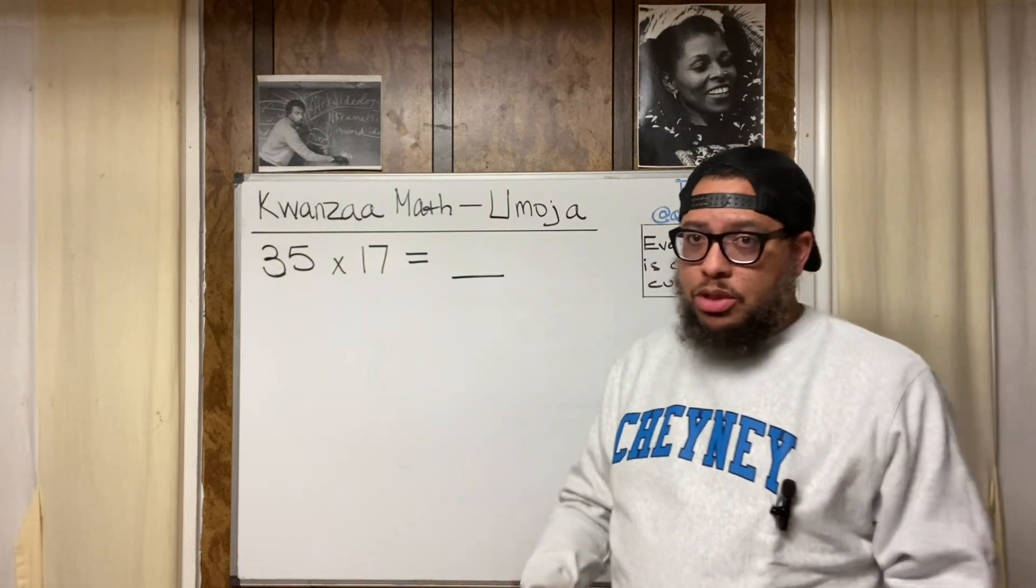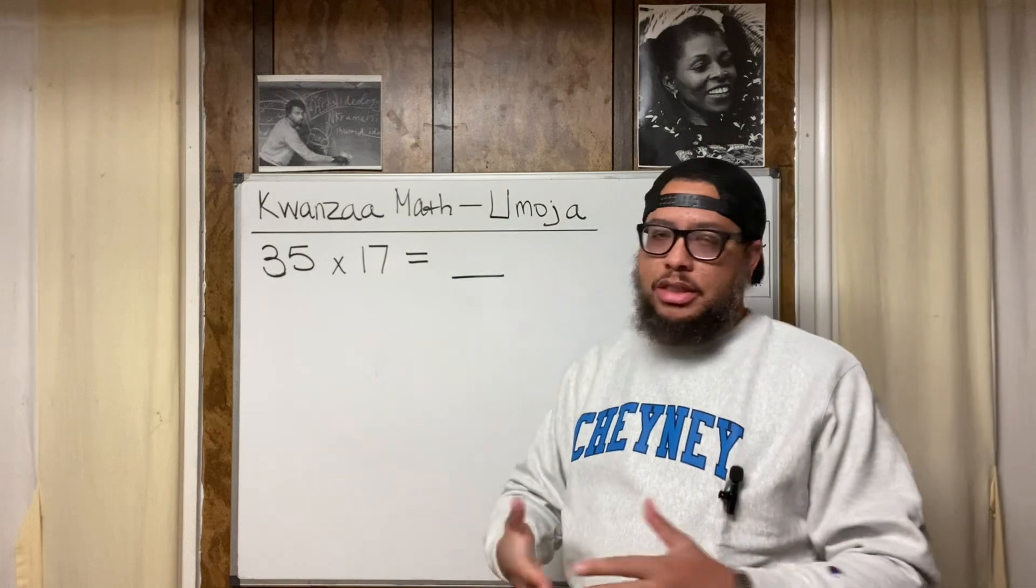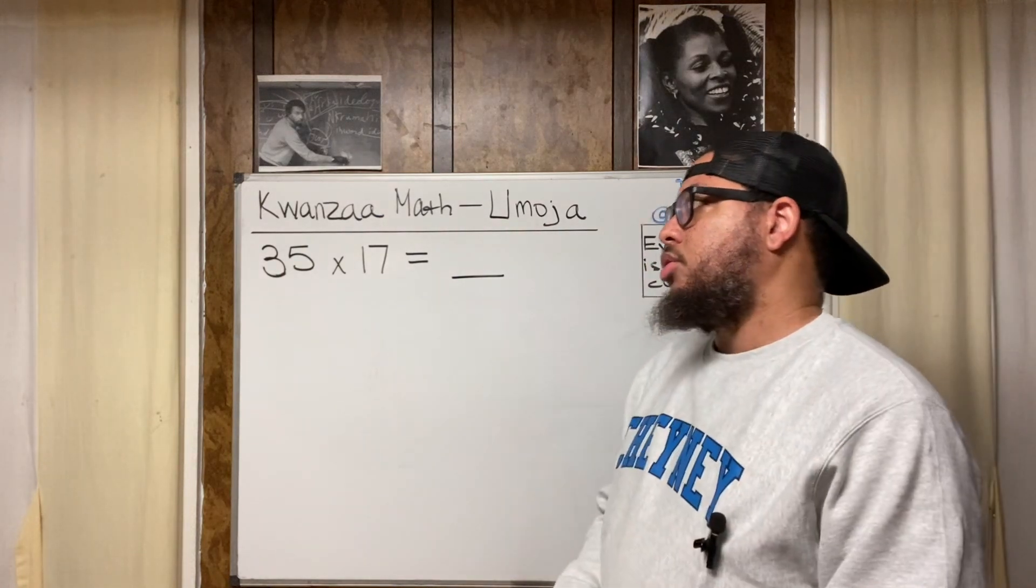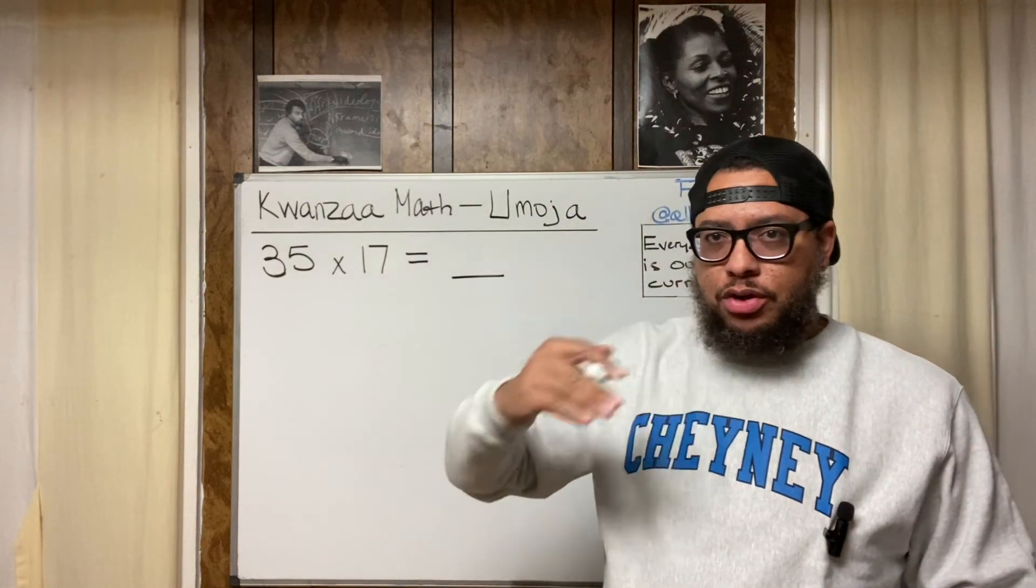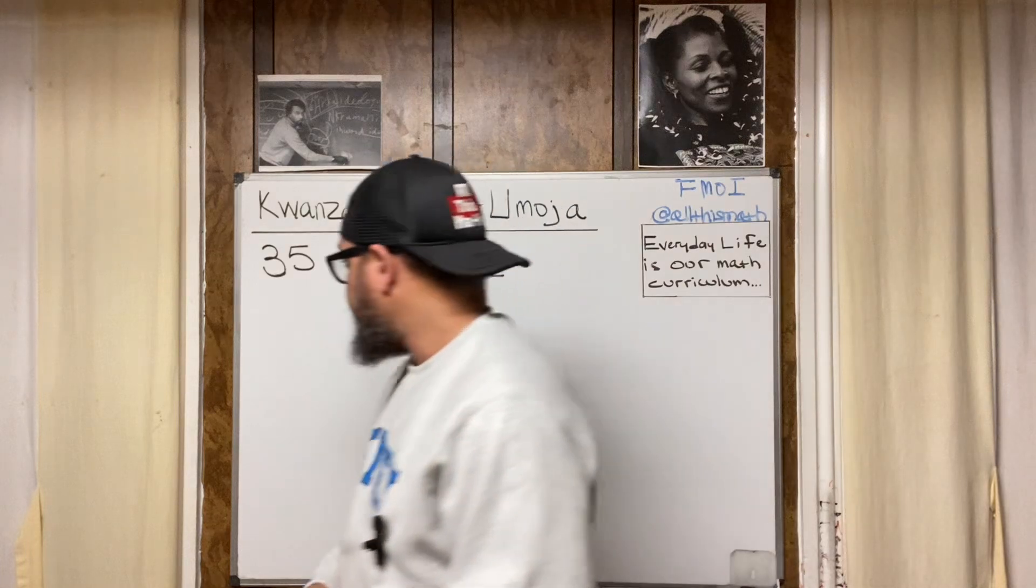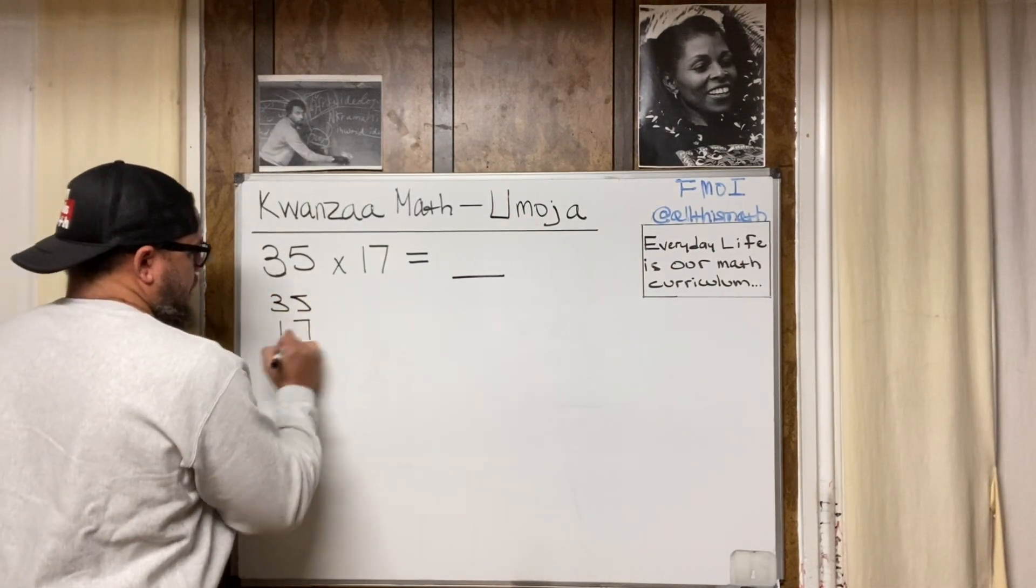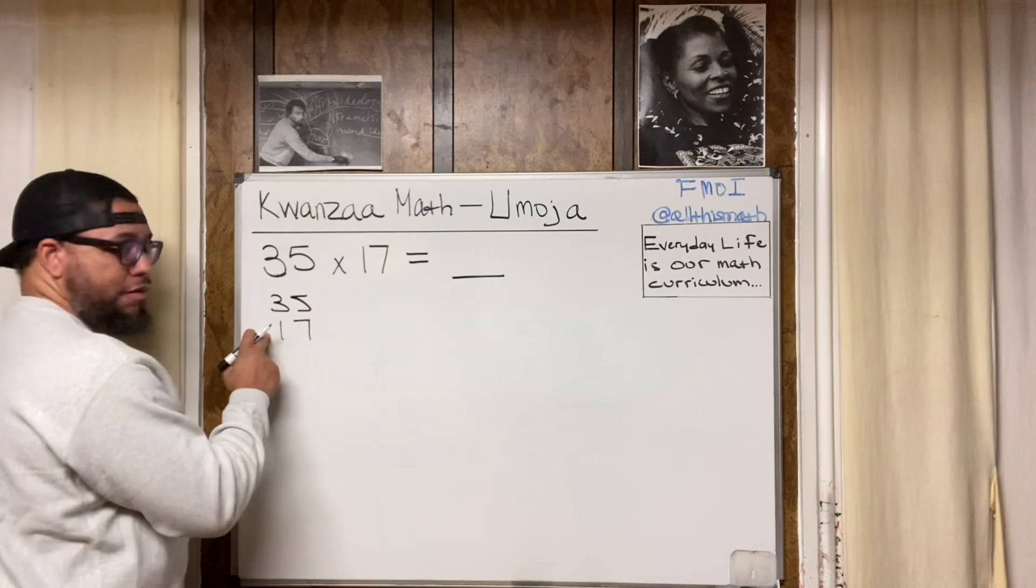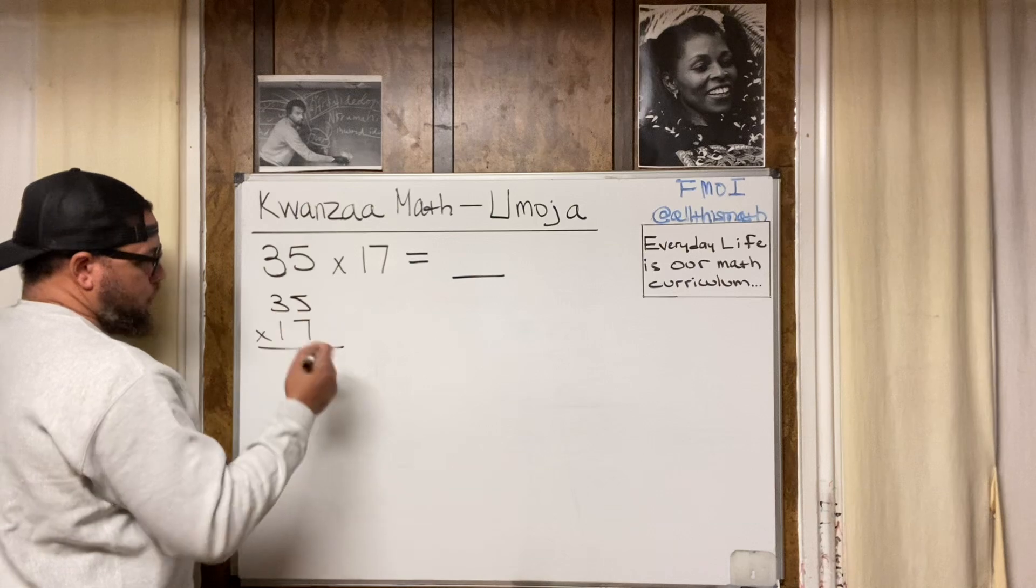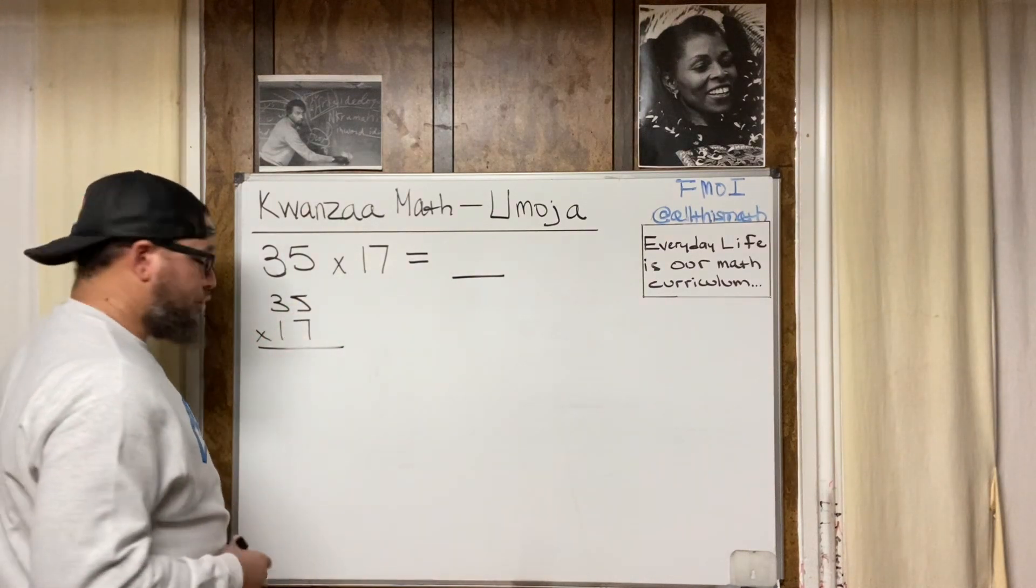The first way we're going to do this is what we call a traditional algorithm, or a common algorithm, or a standard algorithm. You know, it's known by many different names. So that's where we basically just stack the numbers on top of each other vertically, and we multiply each digit by each digit. Let me show you. So let's say we have 35 times 17. Write your 35 up here, write your 17 right here, draw your horizontal line, put your X. This is what some people would call old math.